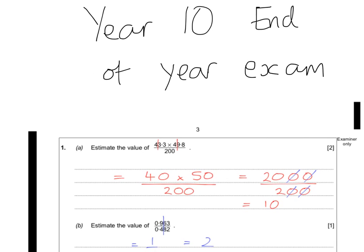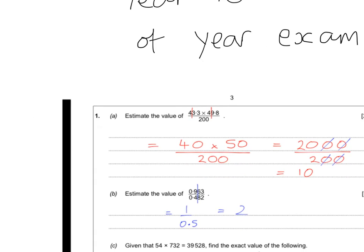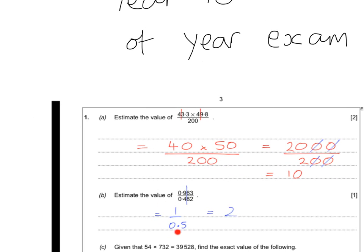The next question was an estimating one as well. One significant figure means you round after the first non-zero number, so that's why the line has gone down after the 9 and the 4 this time. That 6 is going to round that 9 to 1.0, or just 1, and that is going to become 0.5. So the question is 1 divided by 0.5. A lot of the mistakes in the exam were people just leaving it as that — it was only worth one mark and you won't get it for just rounding. You've got to say how many 0.5s go into 1, so counting 0.5, 1 — the answer was 2.